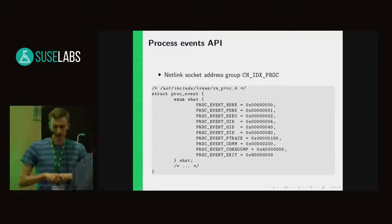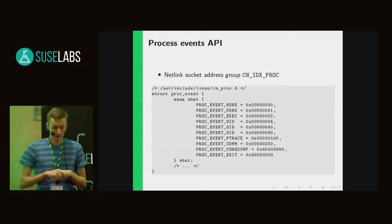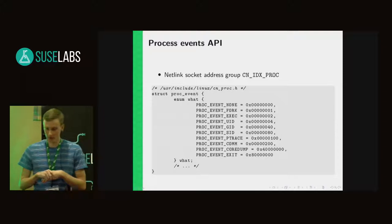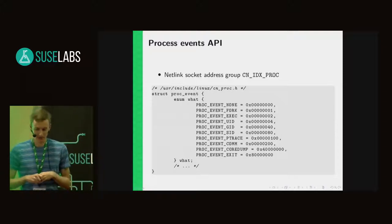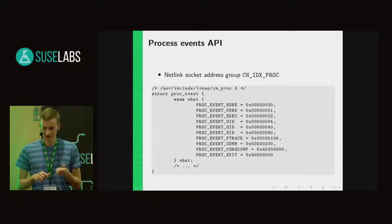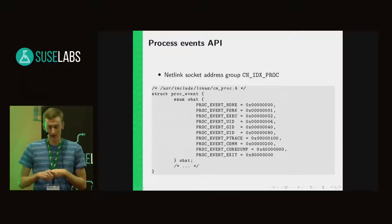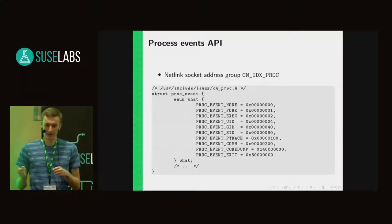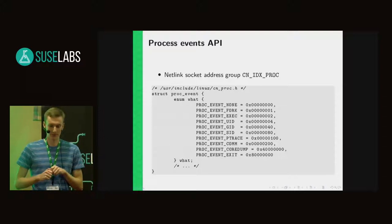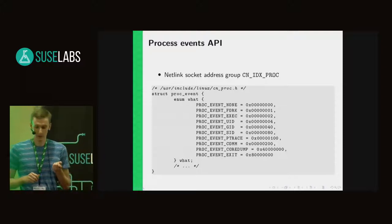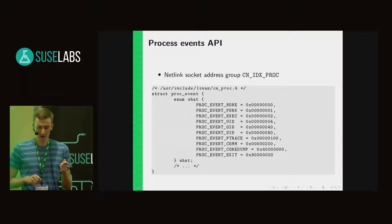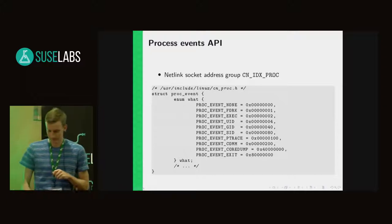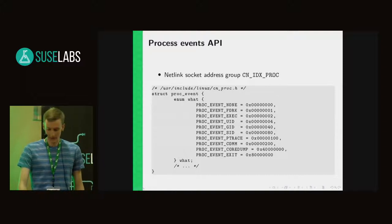Another interesting API are the netlink sockets for a special address group called 'cn_idx_proc', which allows a user space application to listen to events related to process creation. Here you can see the list of events. The most important for us are 'proc_event_fork' and 'proc_event_exec'. So that was the overview of the kernel interfaces.